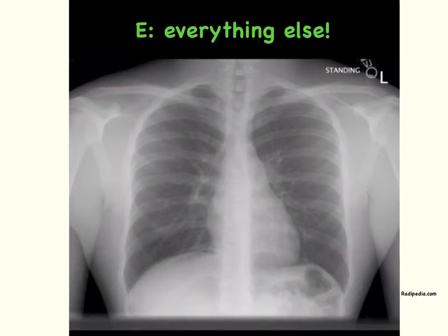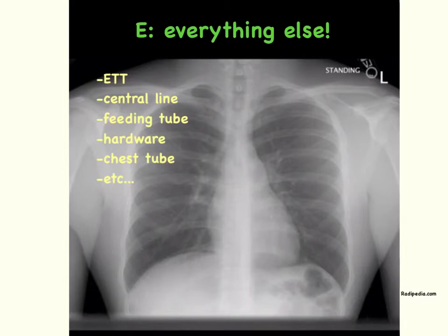E is a broad category that covers everything else in the chest x-ray not covered in the ABCD part. Although you may only be getting a chest x-ray to evaluate the lung field or the cardiac size, you have to evaluate every part of the film because you're responsible for anything seen on it. This everything else category includes evaluating the position of ET tubes, central lines, feeding tubes, the presence of any surgical hardware, chest tubes, pacemakers, and so on.